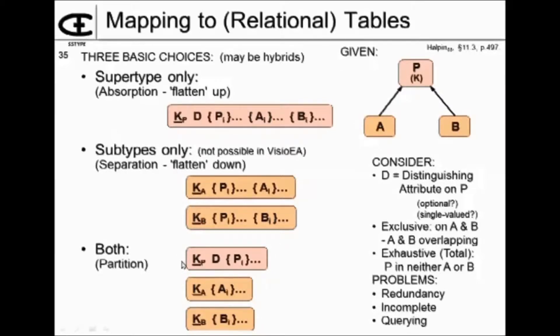Or I could do both. I could leave a table at the supertype level as well as have a table for each of the subtypes. Now consider, here I've got D as the distinguishing attribute, and there are different scenarios that could come up here, but let me just address a few of them.